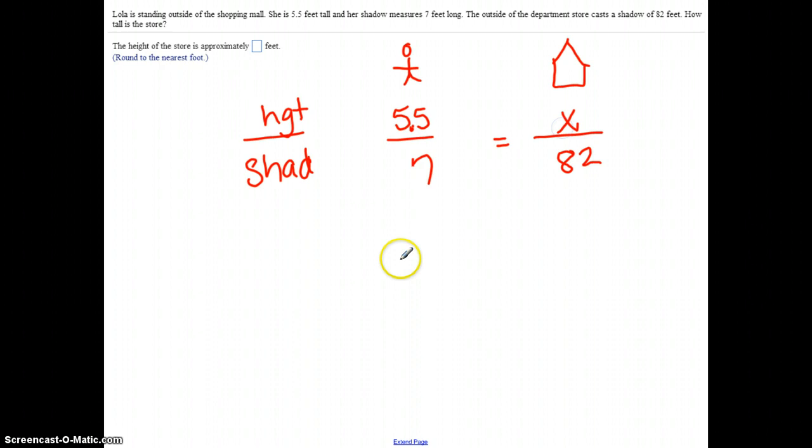Find out how tall the department store is. Cross-multiply: 7x equals 5.5 times 82, which gives you 451. Divide by 7 and x is 64 feet.